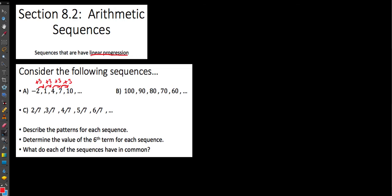Looking at this, we can say the pattern is increasing constantly by plus three. So in this case, we're going to predict the next term — if we add another three, our sixth term A₆ would be thirteen. Looking at the next sequence, it looks like it's going downhill, going down by ten every time. And in terms of what I would predict as my next term value, if it continues to go down by ten, I could predict that it would be fifteen.